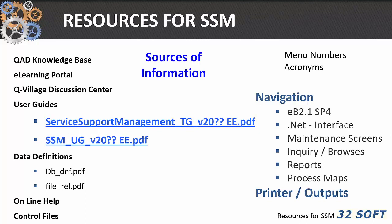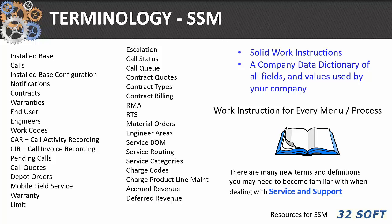Service and support is different. For a lot of us it's work orders, purchase orders, sales orders — all the things we're used to with our manufacturing environment — but now with service and support we're outside of the organization. So it takes kind of a mindset change. Lots of resources out there: the knowledge base, the service and support training guide and the user guide, which are just about mandatory for help with understanding service support. Lots of new terms: material orders, install base, warranties and contracts, charge codes — all sorts of new concepts.